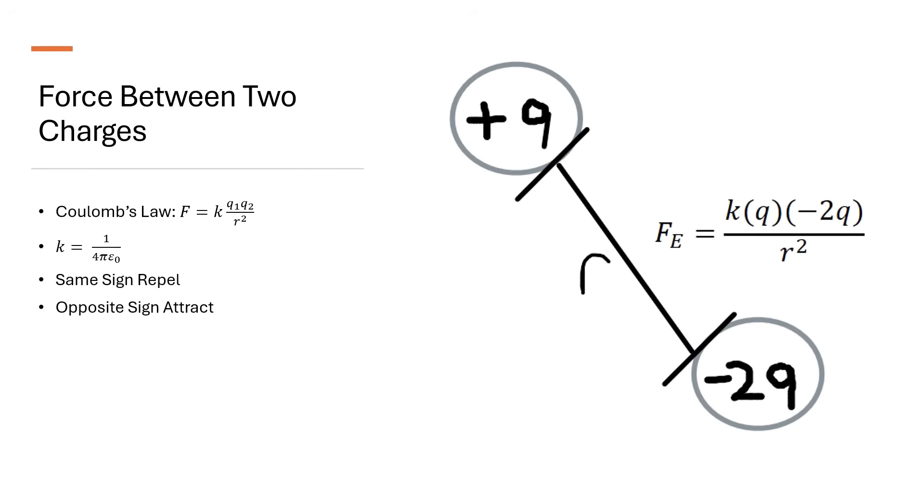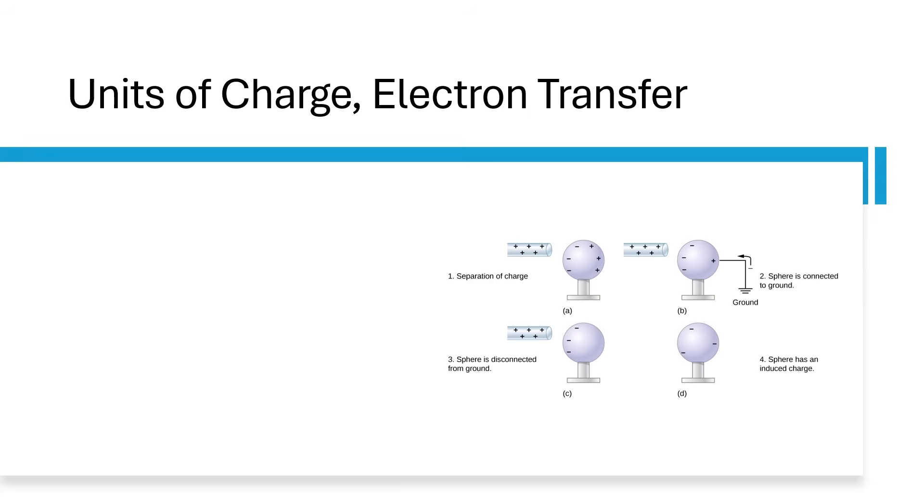Charges with the same sign repel while opposite charges attract. There are a couple different units of charge. An elementary charge is just the charge of one proton or electron, while a Coulomb is the charge of 6.25 times 10 to the 18th elementary charges.